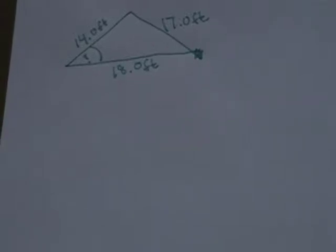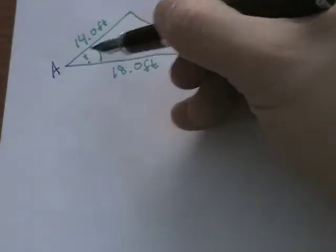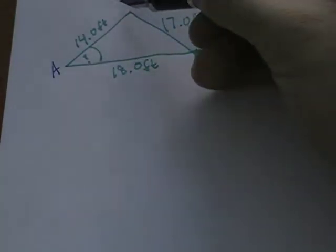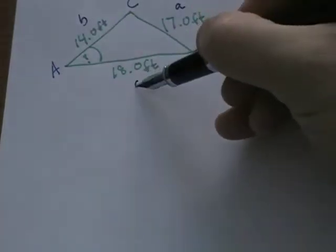So we've been asked today to solve this triangle for the unknown angle labeled here. If we were to label this triangle like a typical triangle, A, B, and C, that would make this side A, side B, and side C.